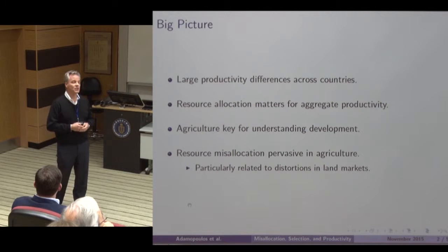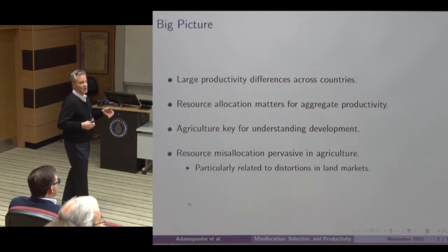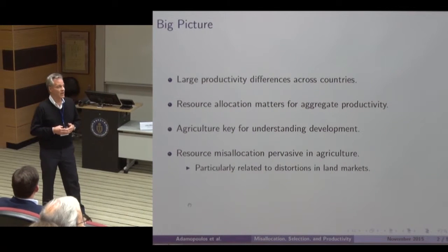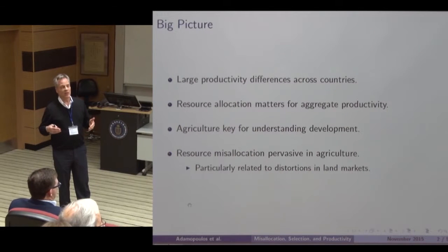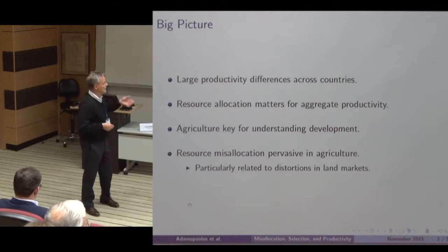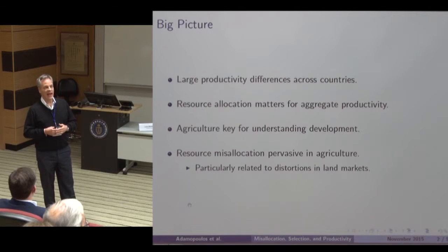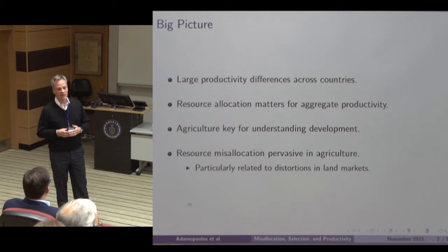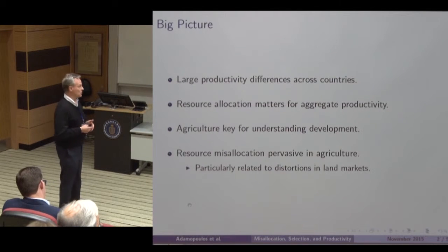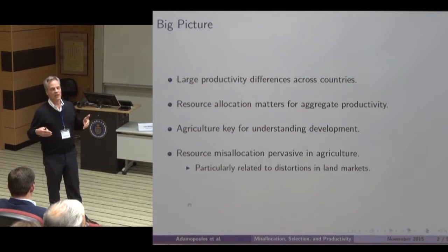We all know that when we look at differences across countries — differences between rich and poor — one of the things underlying those differences is just huge productivity differences. We've also become a lot more sensitive to the fact, in part because of the work of Rogerson and Diego and others, that resource allocation is extremely important. How efficiently resources are allocated is extremely important to these productivity differences. When we look at differences between rich and poor countries, one reason countries tend to be poor is because of what's going on with agriculture. Agricultural productivity tends to be extremely low, and a high percentage of people are in the agricultural sector exactly because productivity is low.